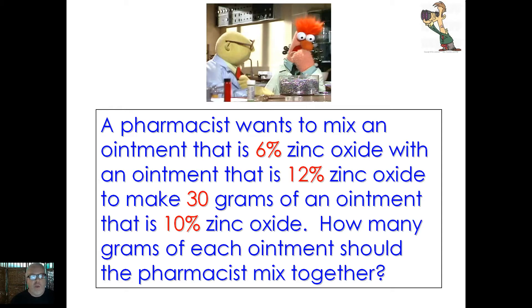How many grams of each ointment should the pharmacist mix together? Now, don't be concerned about the zinc oxide or these words. It's just a chemical compound mixing, of course, zinc and oxide. I think oxide means O2, but you have to ask one of your science teachers to be exact. Nonetheless, notice what's in red here. We're looking at the key parts of the math: 6 percent, 12 percent, 30 grams, 10 percent. Let's see how we can take all those and put them together. So just sit back and watch.